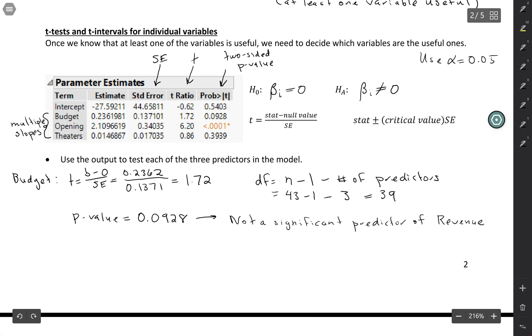But this is multiple regression, so you always have to add this tag: after controlling for the other variables in the model. So in this case, the other variables in the model are opening and theaters. And you could have also said, holding those variables constant, or adjusting for those variables, or something like that.